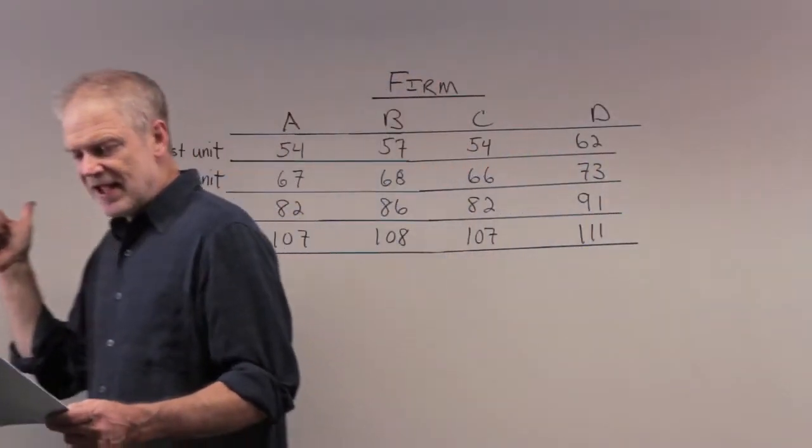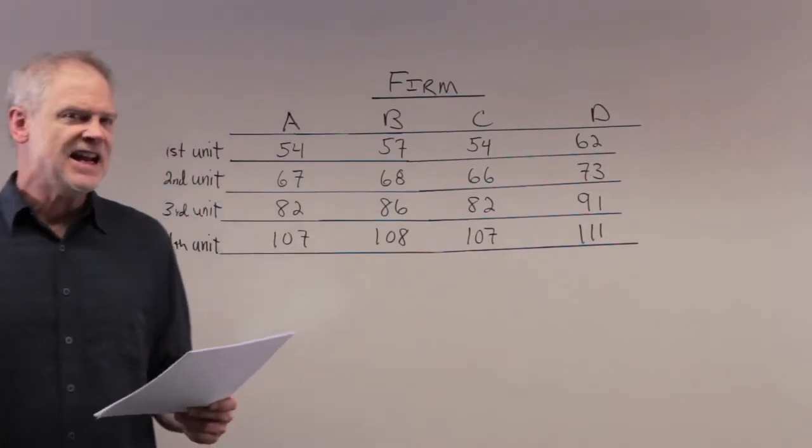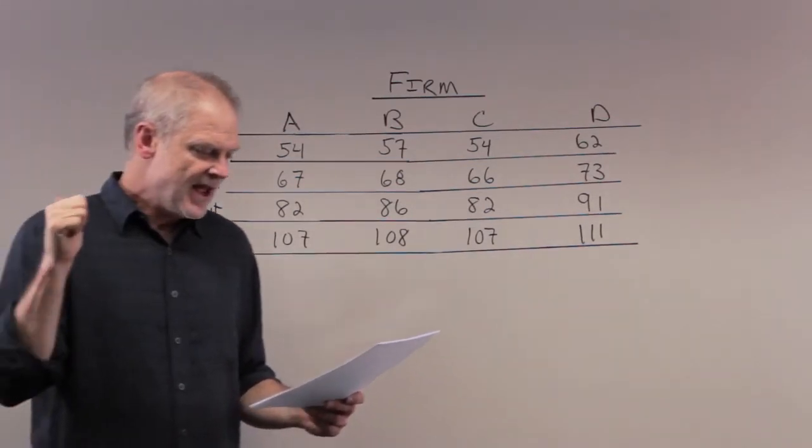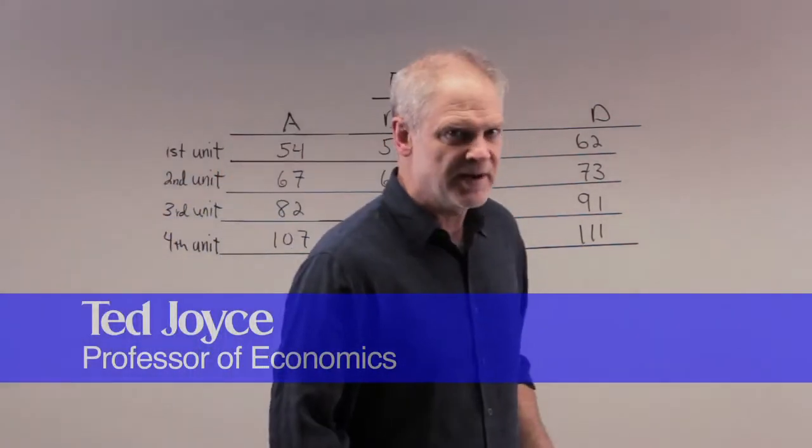Refer to Table 10-5. Here we go. If the government charged a fee of $84 per unit of pollution, how many units of pollution would the firms eliminate altogether?